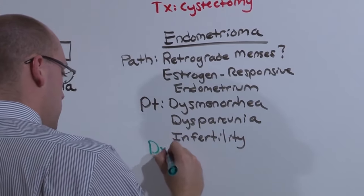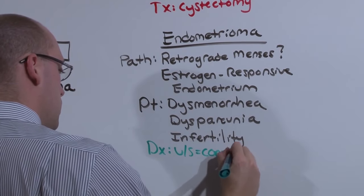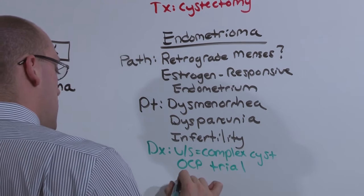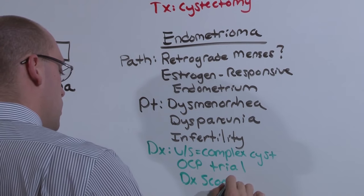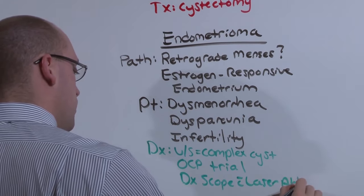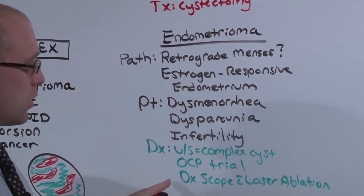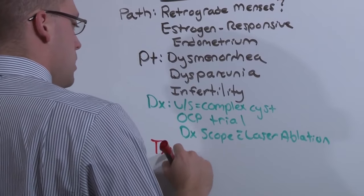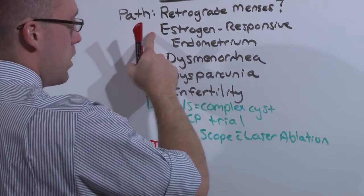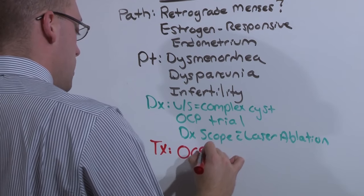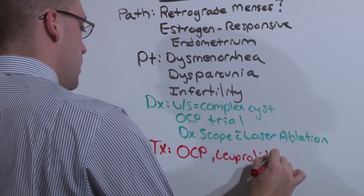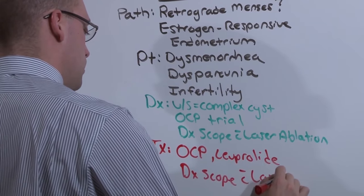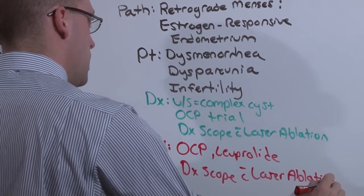The diagnosis is made first with an ultrasound that shows you the complex cyst. And then with an OCP trial, you actually treat it before you do the next step. The best test is a diagnostic scope with laser ablation. You actually put a camera in the belly and go find the chocolate cyst. You find the blue lesions and actually burn them away. And the treatment is to control the axis because it is an estrogen responsive endometrium. Control the axis either with oral contraceptives or continuous Luprolide. And then ultimately you will go in and do the diagnostic scope with laser ablation.